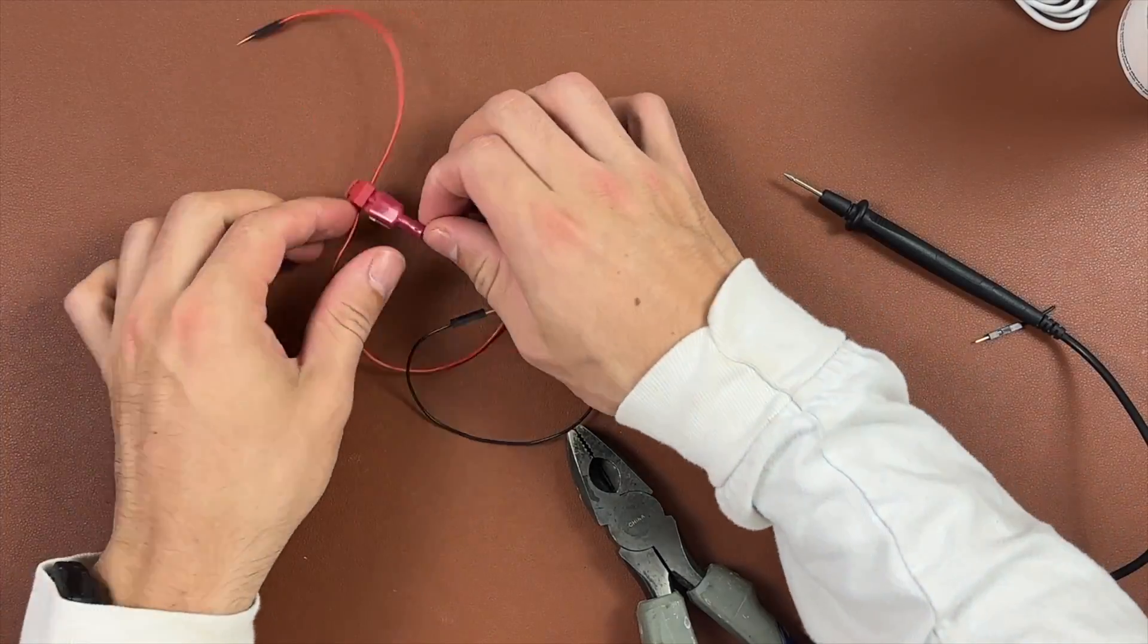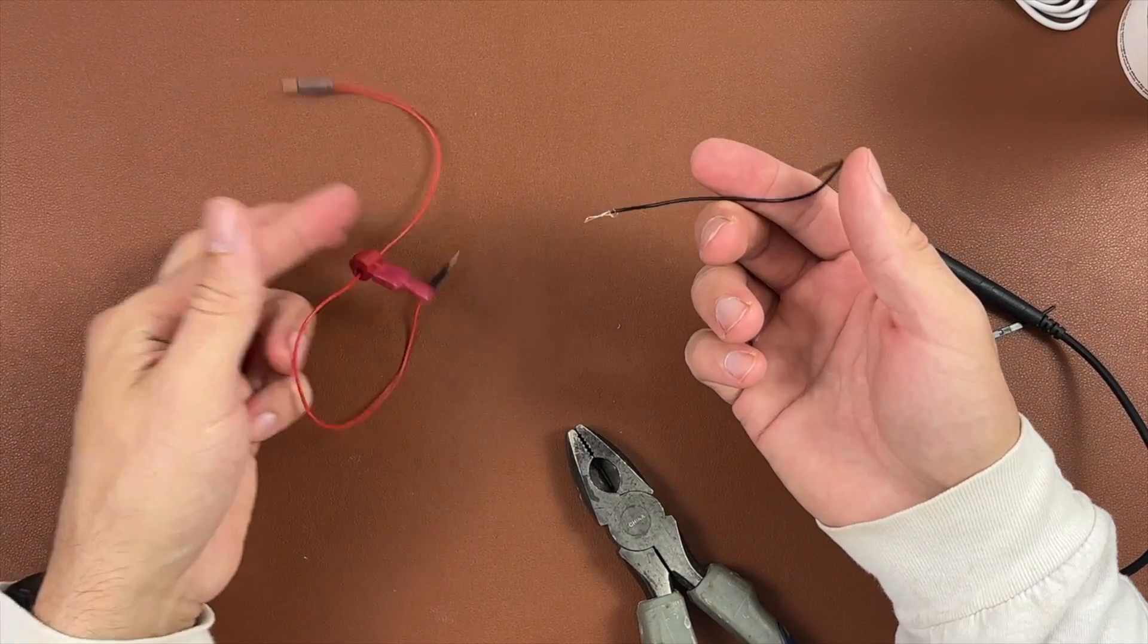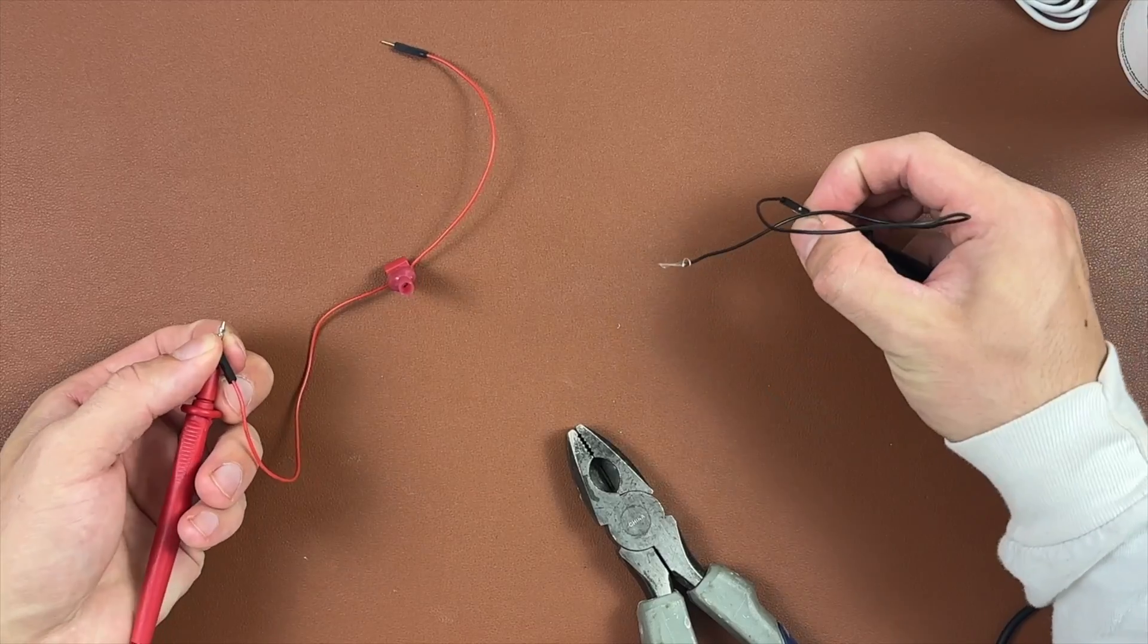Why this stinks. Pull on the wire. In theory, the crimp should be solid. Maybe I'm just doing it wrong, but doing it this way gave me nothing but problems.